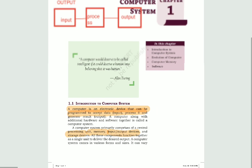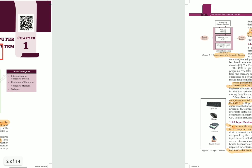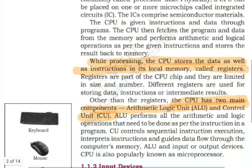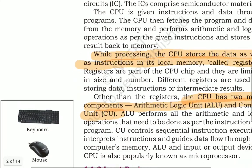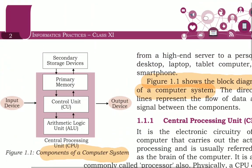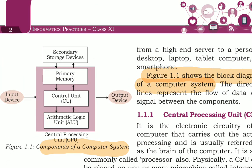Next we will talk about the basic components of a computer system. A computer system has three basic components: first is the CPU, that is the central processing unit; second, input devices; and third, output devices.